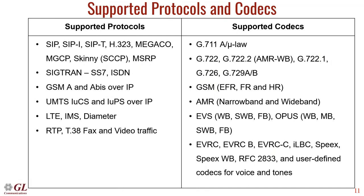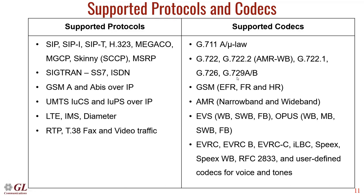The protocols supported by Packet Scan software include SIP, MGCP, Megaco, MSRP for emergency services networks, SIGTRAN including SS7 and ISDN, and for 2G, 3G, and 4G — essentially all the protocols you would see in the core network. We can analyze and produce call detail records for all of them. The software also supports essentially all industry-standard codecs, though some require additional licenses to decode.